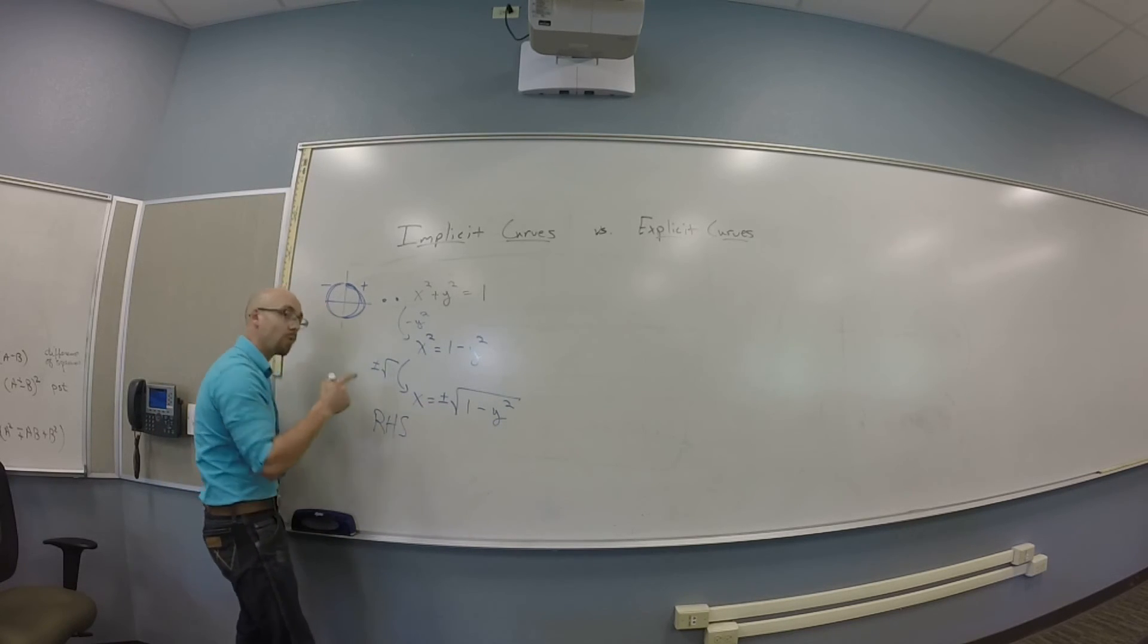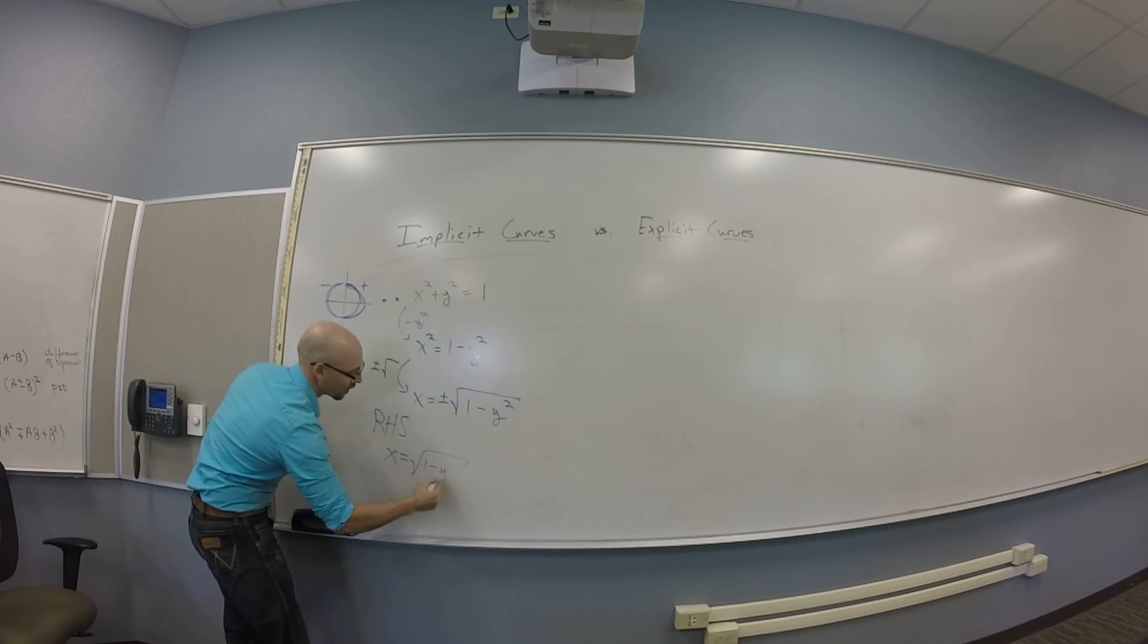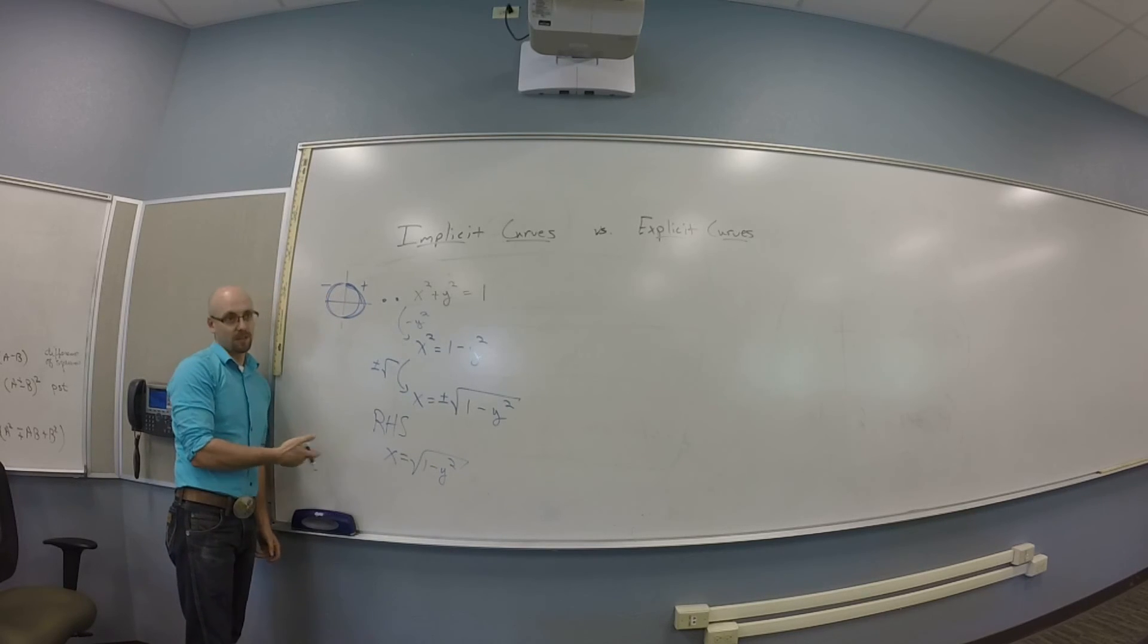So I know that I can get the right-hand side of the unit circle to be an explicit function by writing x is the square root of 1 minus y squared. Similarly I can get the left-hand side explicitly. Sometimes this is a thing you can really deal with if you just restrict yourself to one side or the other. If you need a general solution that works on both sides, this isn't going to work. You've got to deal with the implicit version. But if you just care about the right-hand side, then you can pull this trick off.